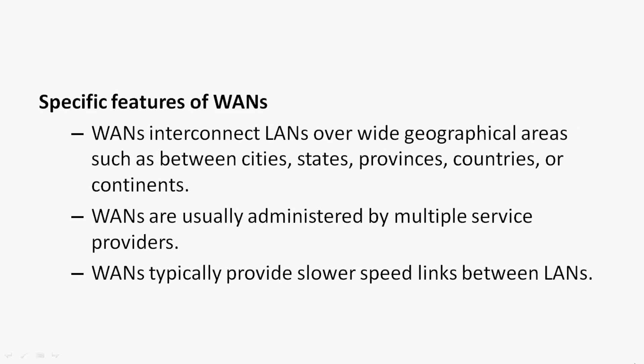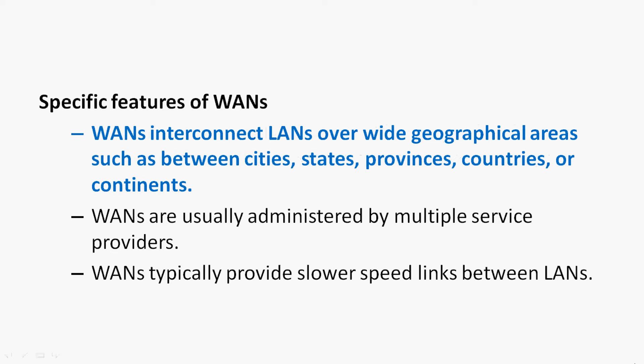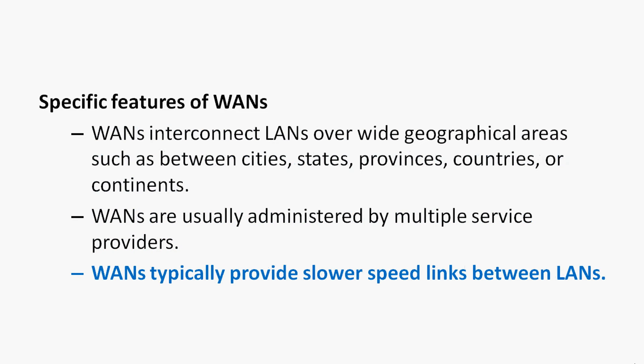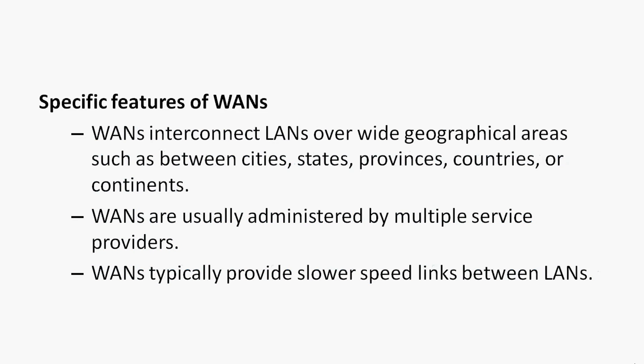Now we will see specific features of WANs. WANs interconnect LANs over wide geographical areas such as between cities, states, provinces, countries or continents. WANs are usually administered by multiple service providers. WANs typically provide slower speed links between LANs.